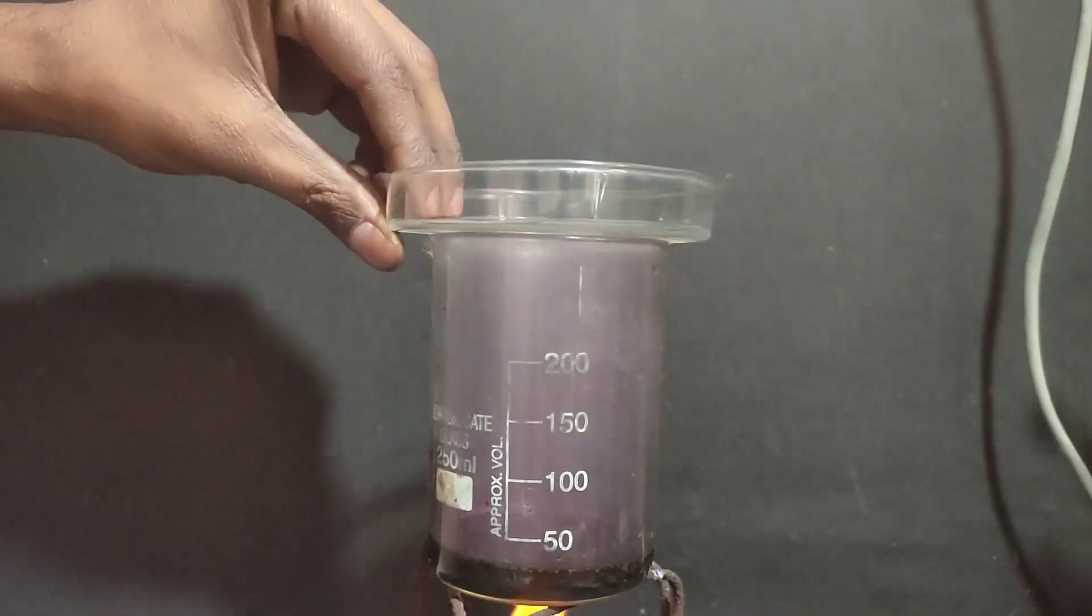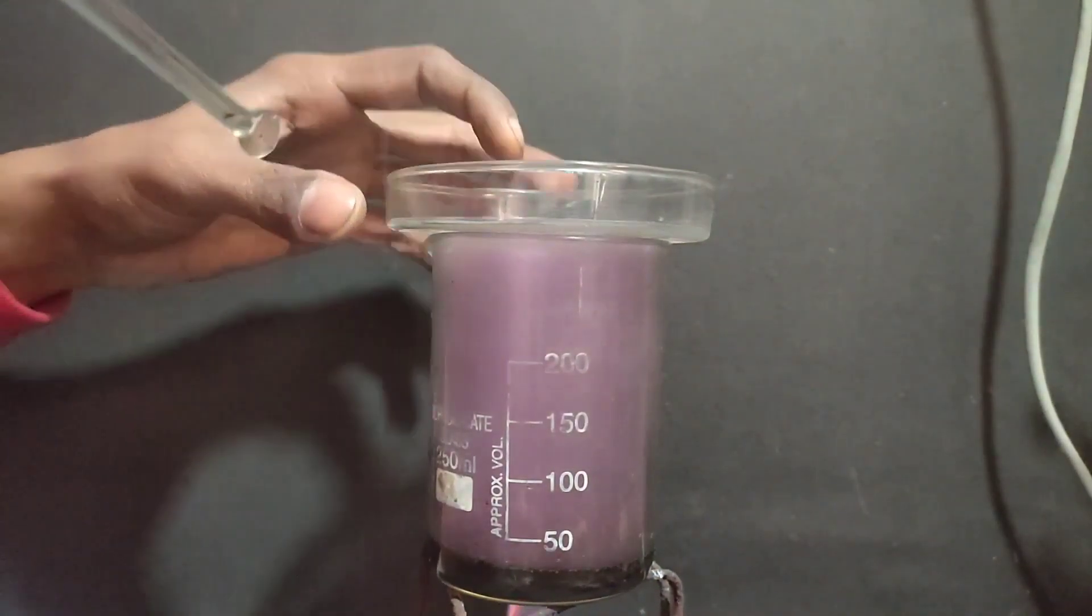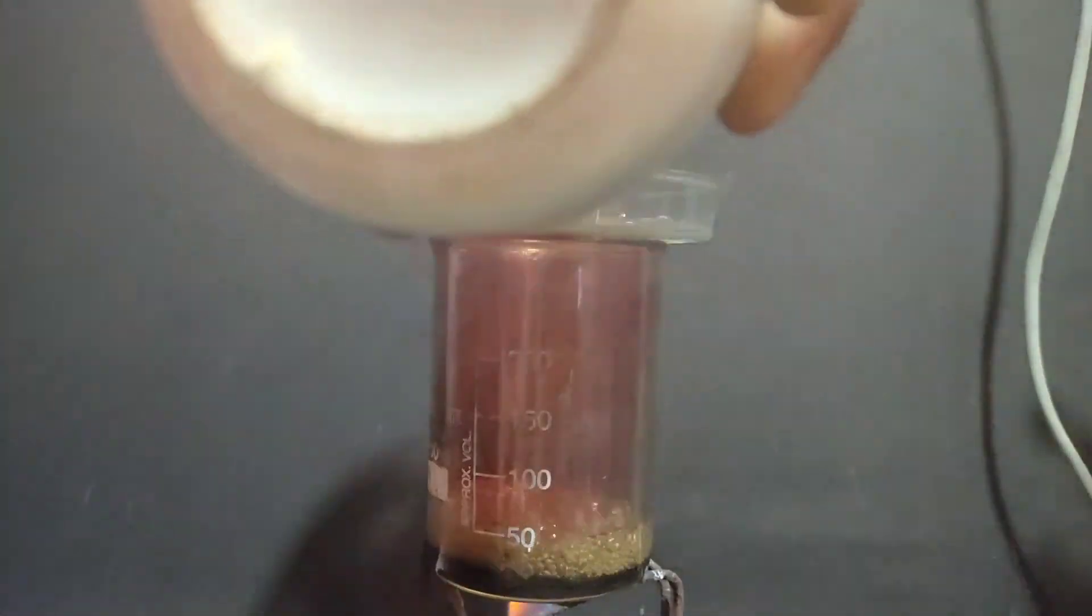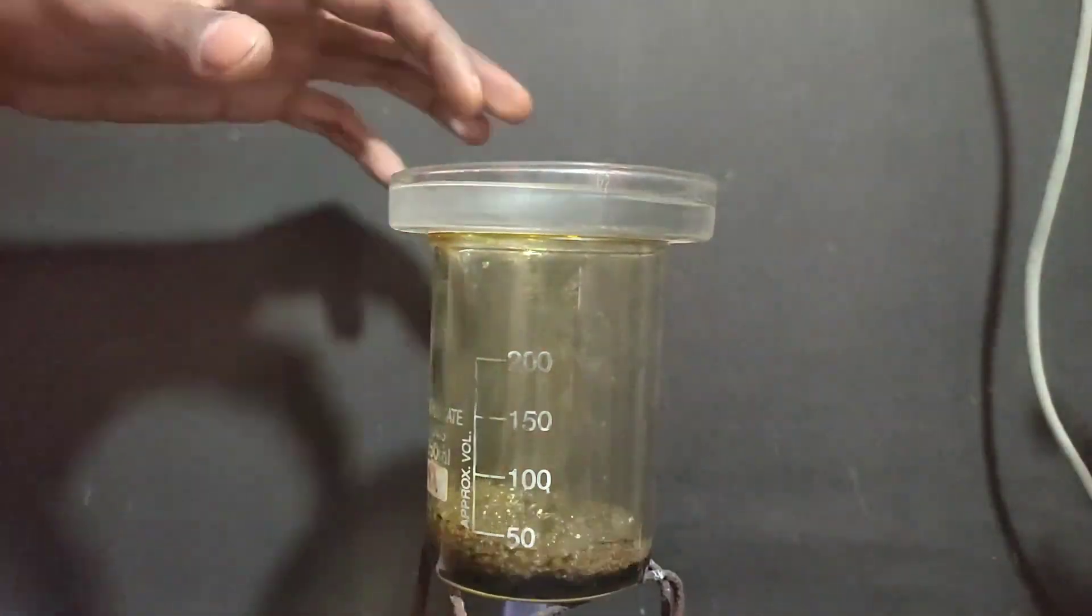But I added around a ml and a violet vapor of iodine started evolving. So I covered the beaker with a petri dish in which I added water, but no iodine sublimate was formed.